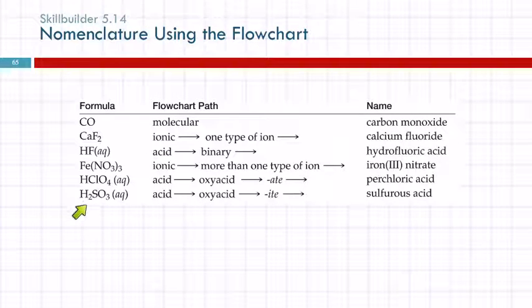So like H2SO3, well you identify it as an acid, and then you go down the chart and you see it's an oxyacid because it has oxygen in it. The ending of its ion ends in -ite, and so that's how you end up with sulfurous acid. May or may not be helpful.